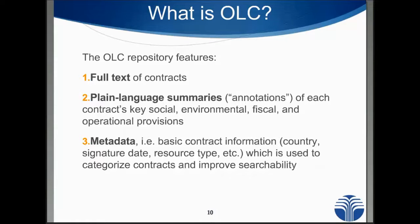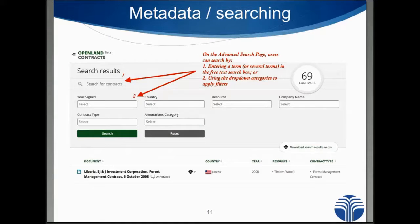We also tag each contract with metadata — basic information about the country the project is in, what resource is involved and so on — so that users can more powerfully search through the database to find particular types of contracts that they're interested in. Here's a quick screenshot of what the different search functionalities look like — you can search by year, by country, by resource and so on.